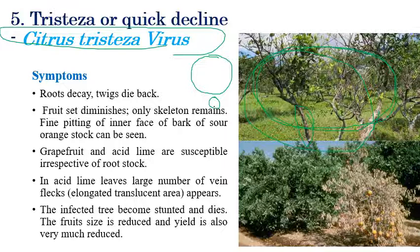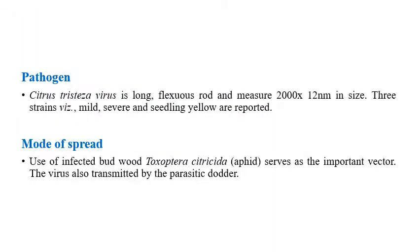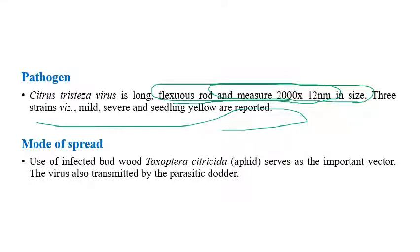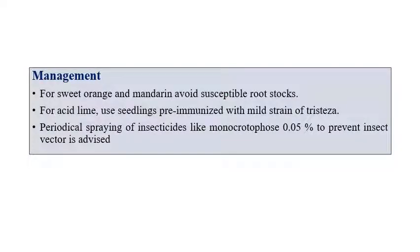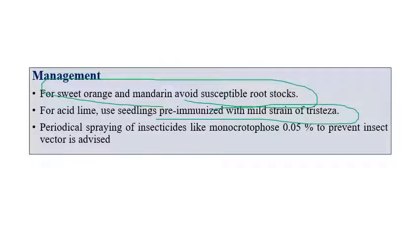The citrus tristeza virus pathogen is a flexuous rod measuring 2000 × 12 nm, making it the longest known plant virus. Three strains exist: mild, severe, and seedling yellows. The virus is transmitted by the aphid Toxoptera citricida, also known as the brown citrus aphid. For management, avoid susceptible rootstocks for sweet orange and mandarin; use acid lime seedlings pre-immunized with mild strains (cross-protection technique). Periodic spraying with insecticides like monocrotophos can also prevent insect transmission.